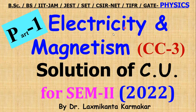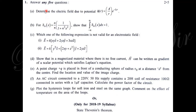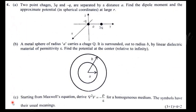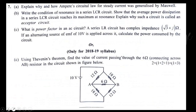This is for Semester 2 Physics, electricity and magnetism, full marks 50. You can see the question paper with question number 1 (a2g), question number 2, 3, 4, 5, 6, and finally question number 7.